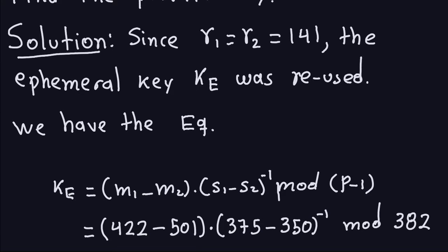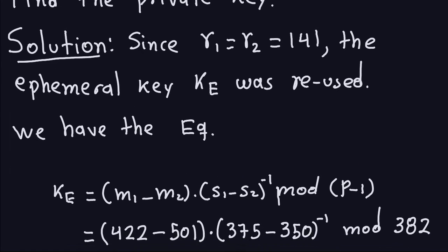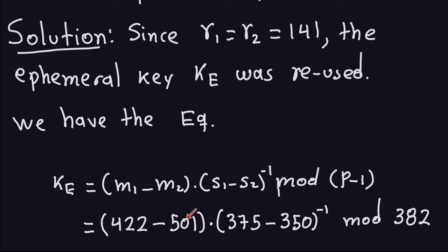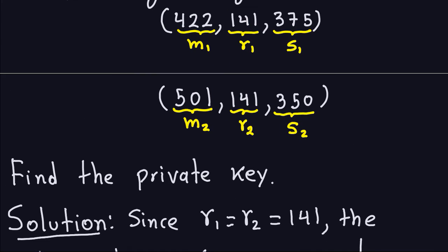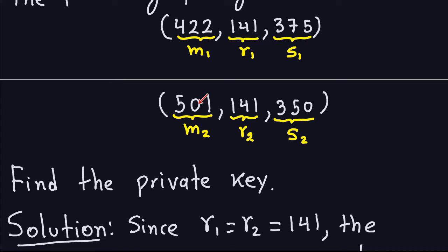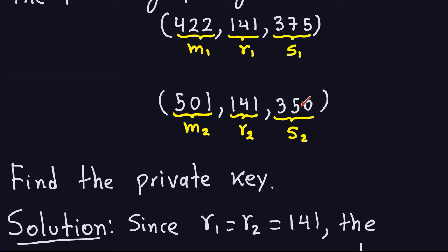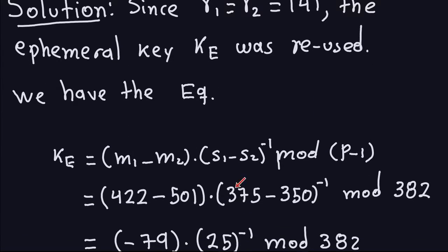In that case, we have the following equation. This equation that you see here is the one we discussed in the last video. From the video, we said that the ephemeral key, if they are reusing it, then it's going to be this computation here. The first message minus the second message times the inverse of S1 minus S2 modulo P minus 1. In this particular case, M1 is 422 and M2 is 501, as you can see from these two packages. And S1 and S2 are these two numbers that are here. This equation was discussed in the previous video.